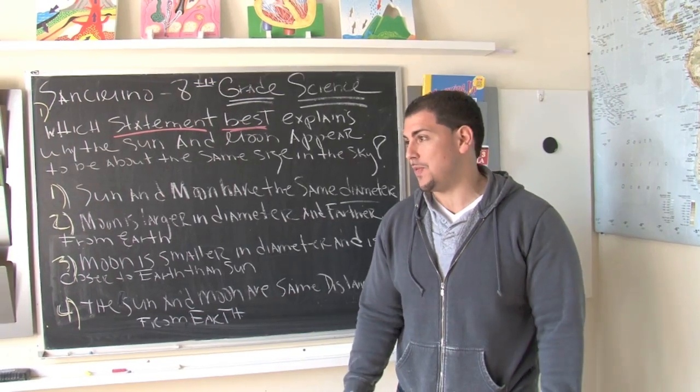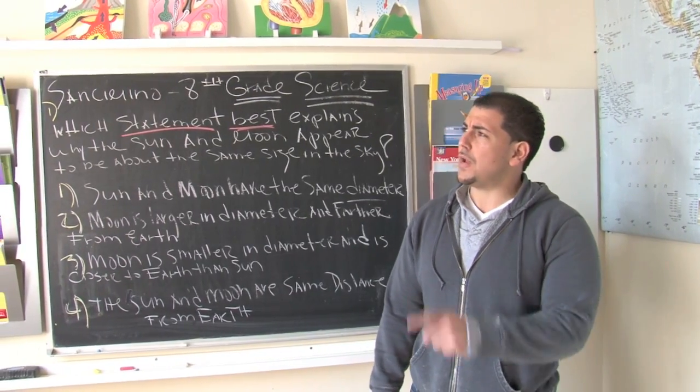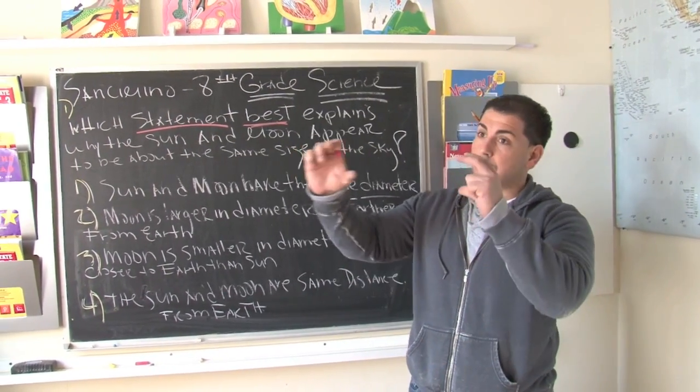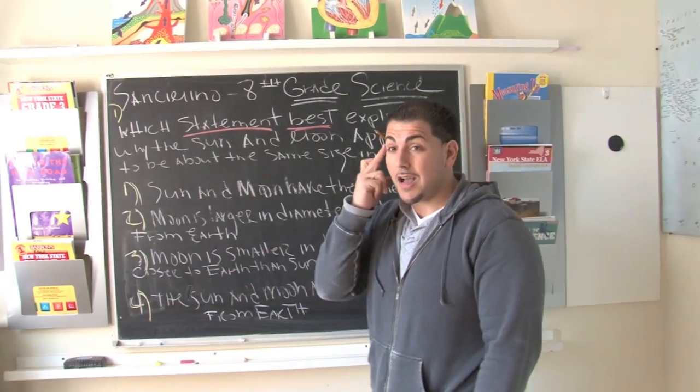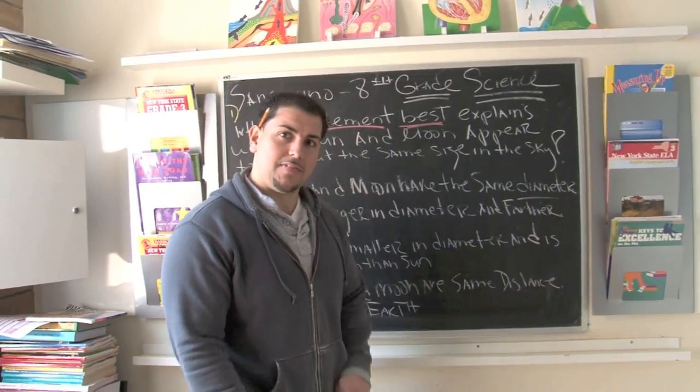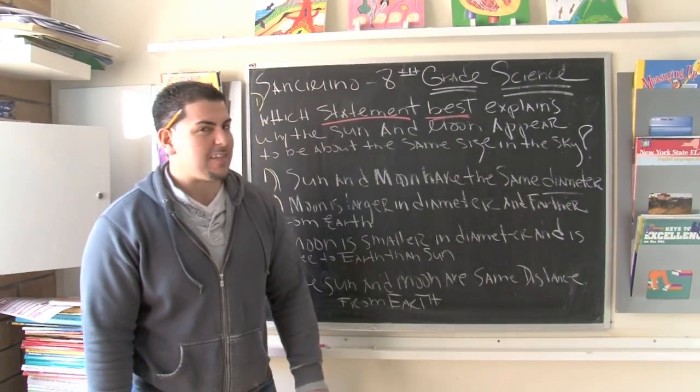Now everybody knows that the sun is bigger than the moon, but because of the way it appears in the sky, it creates an optical illusion. So to the untrained eye, you might think that they appear to be the same size, but that's actually not true.